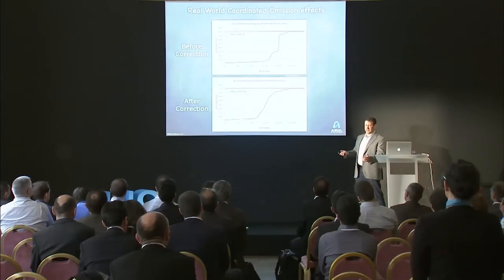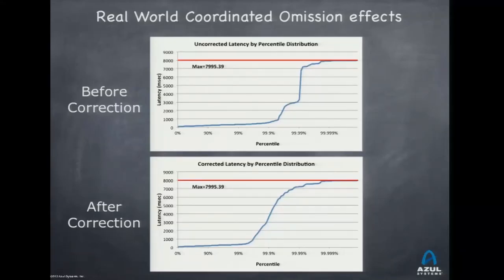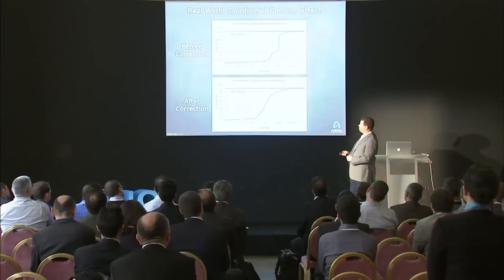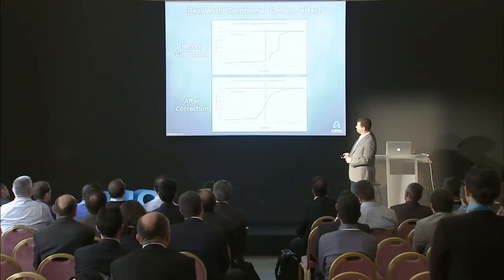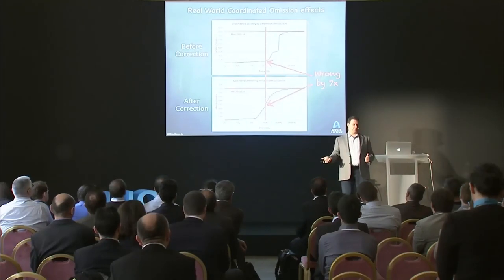From an actual customer — an e-commerce site payment system — before and after correction for coordinated omission on the same data set: at the 99.9th percentile requirement point, there was a 7x difference between measuring correctly and measuring wrong. The requirement was less than one second. They thought they were passing; they were actually miserably failing. Their lab system said everything was okay, but their customers were complaining.